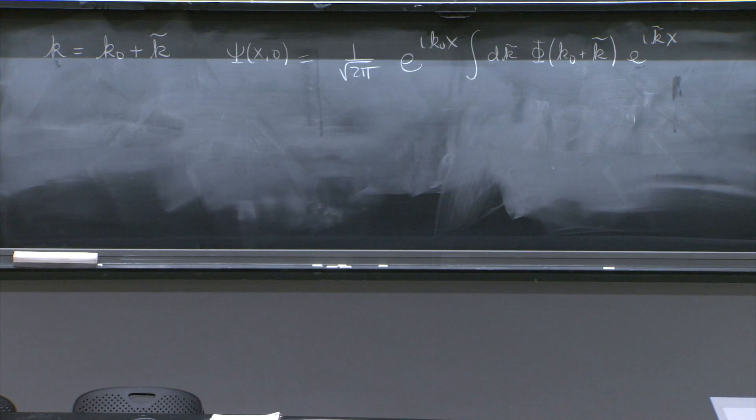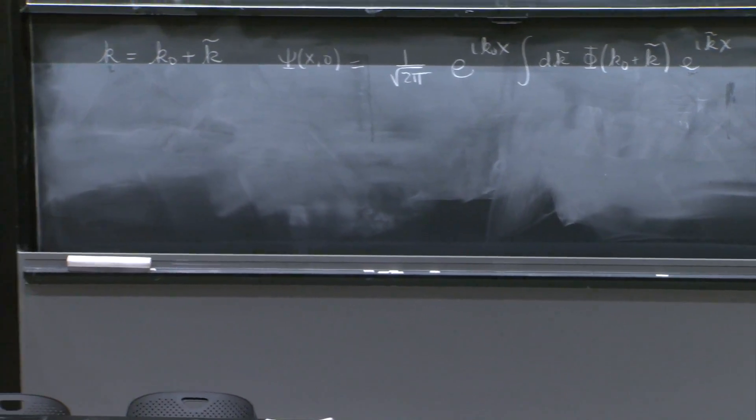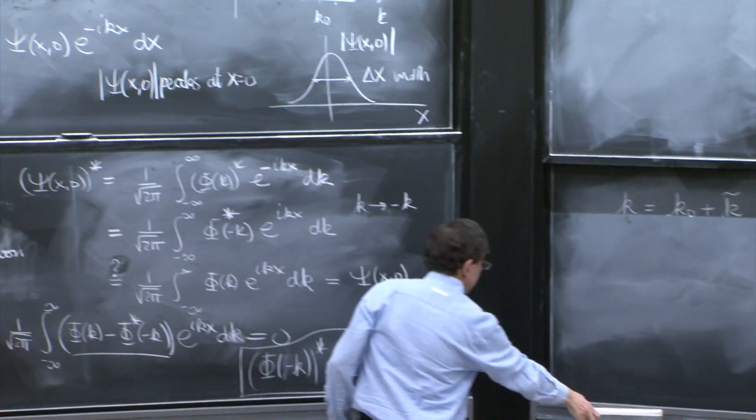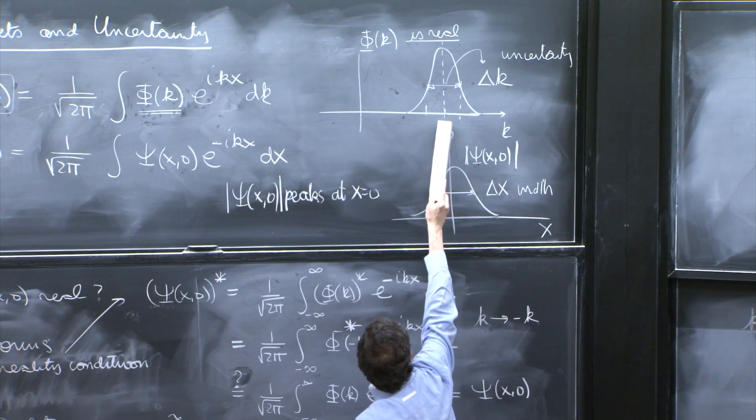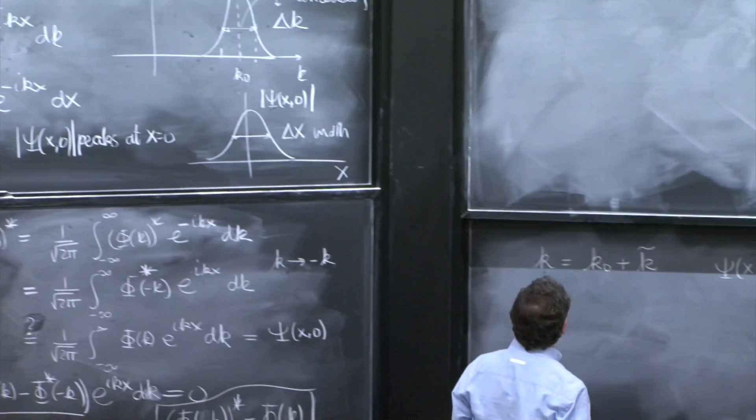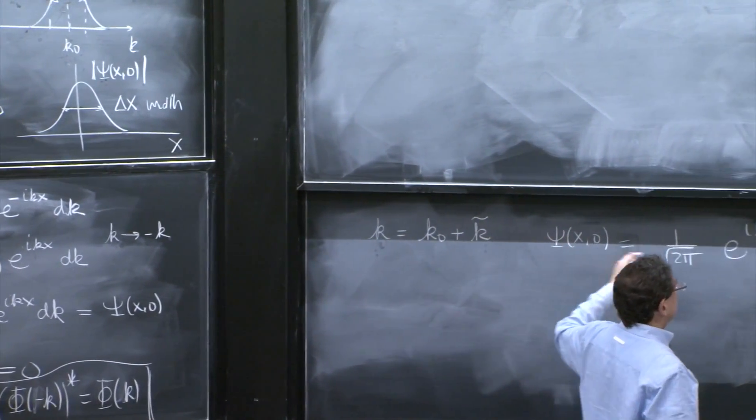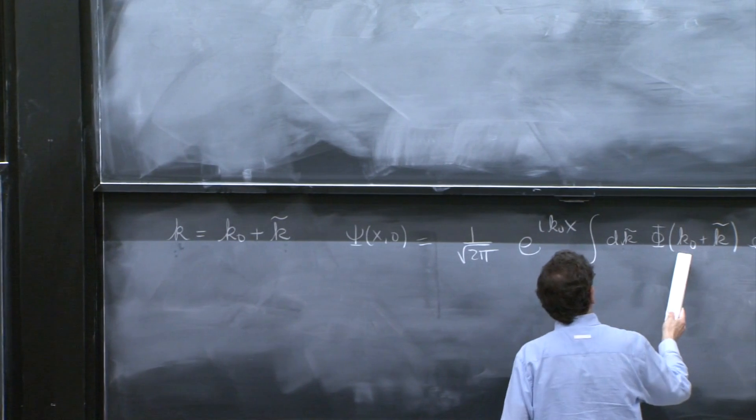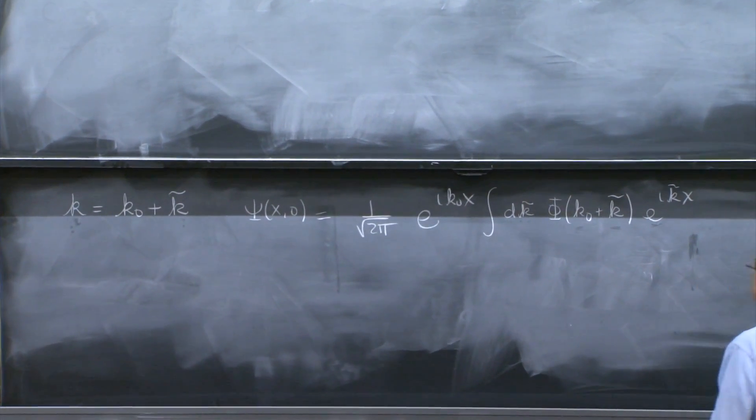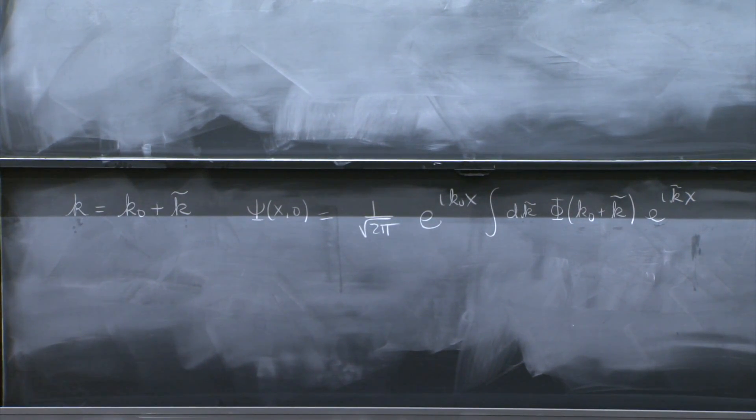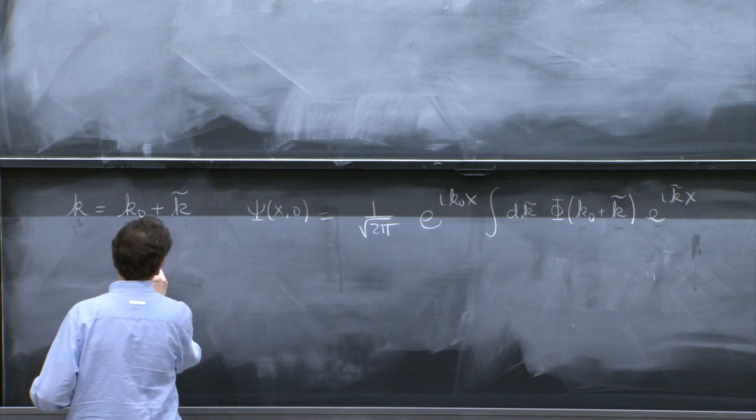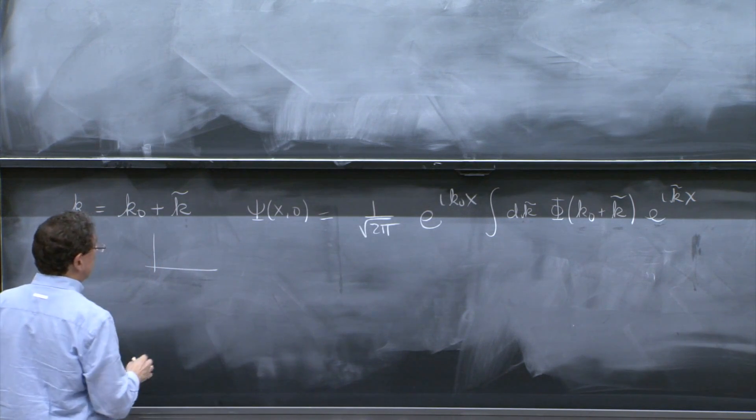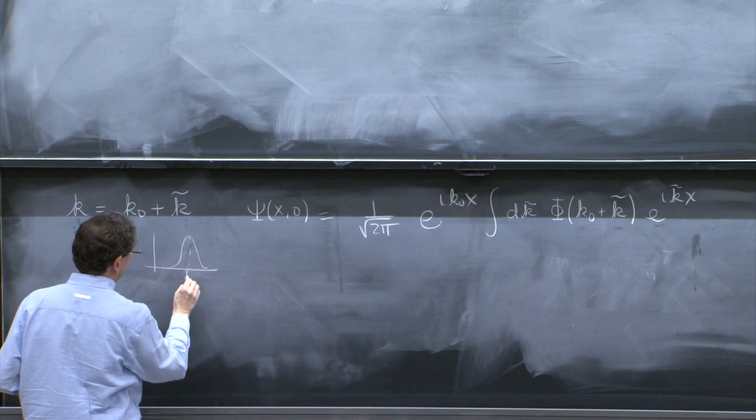So we're doing this integral, and now we're focusing on the integration near k0 where the contribution is large. So we write k as k0 plus a little fluctuation. dk will be dk tilde. Wherever you see a k, you must put k0 plus k tilde. And we basically have now this peak over here, k0.